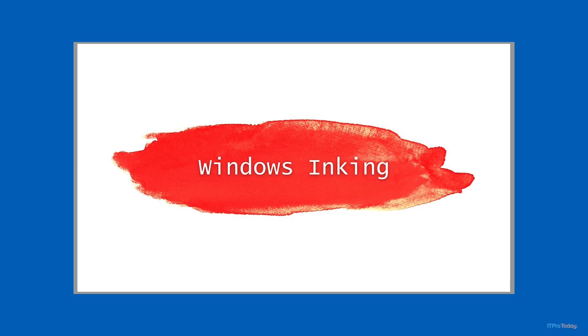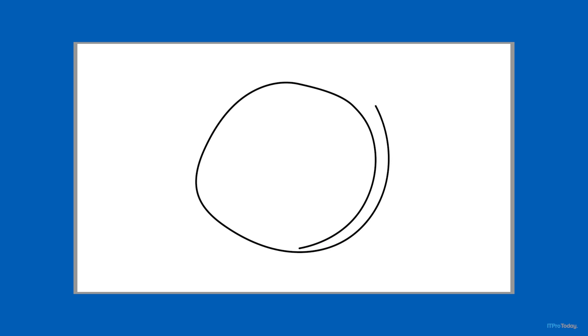For anybody who is not familiar with Windows Inking, it's the idea that you can use a pen, a stylus, or even your finger and write on the screen. Microsoft originally introduced this with the Surface devices when those first came out, because you could use the Surface Pen and write on the screen. Today, of course, there are many other devices that also support inking, and I was curious if you could do this with PowerShell.